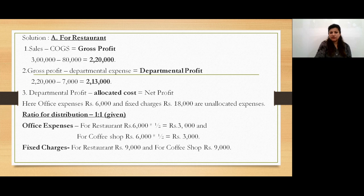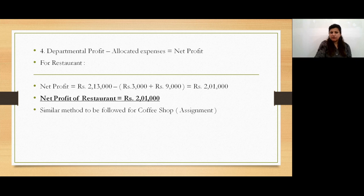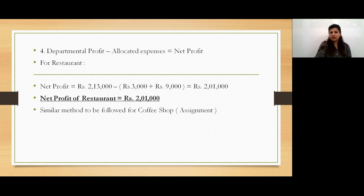Similarly, we allocate fixed charges among restaurant and coffee shop. Fixed charges total 80,000 and are divided equally, giving 9,000 each for restaurant and coffee shop. For the net profit of restaurant, we deduct the total allocated expenses of 3,000 plus 9,000 = 12,000 from the departmental profit of 2,13,000, giving a net profit of 2,01,000.